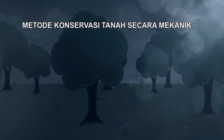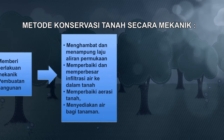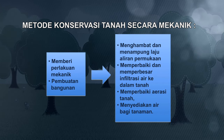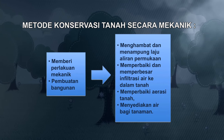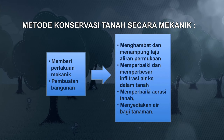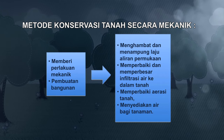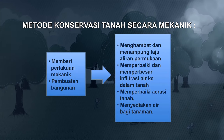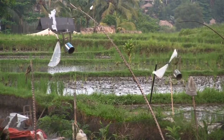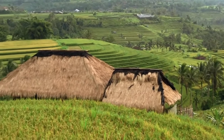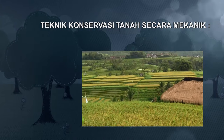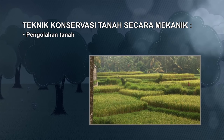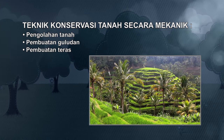Metode konservasi tanah secara mekanik dilakukan dengan cara memberi perlakuan mekanik terhadap tanah dan pembuatan bangunan yang fungsinya untuk menghambat laju aliran permukaan, menampung aliran permukaan, memperbaiki dan memperbesar infiltrasi air ke dalam tanah, memperbaiki aerasi tanah, serta menyediakan air bagi tanaman. Teknik ini dilakukan antara lain dengan pengolahan tanah, pembuatan guludan, dan pembuatan teras.